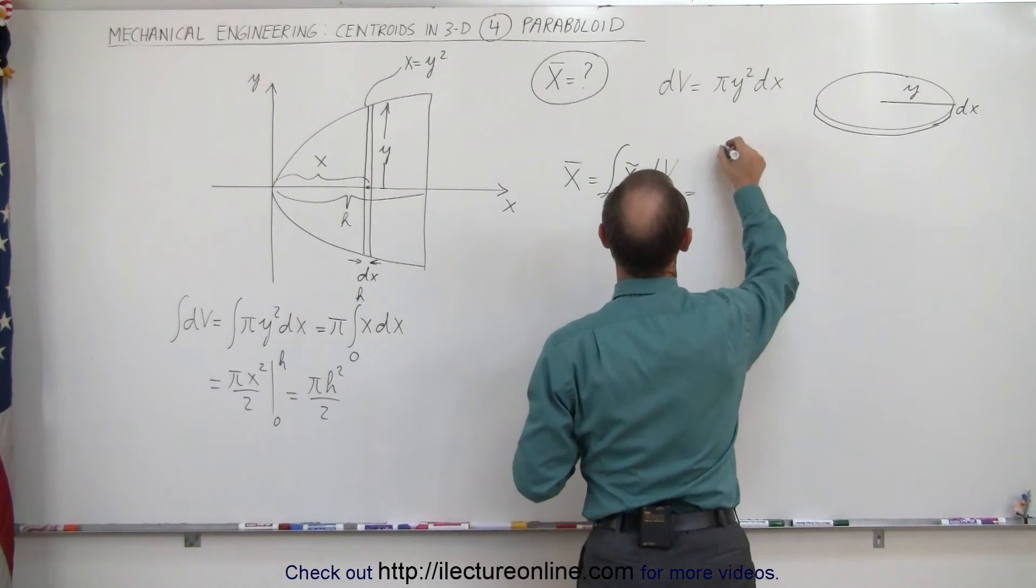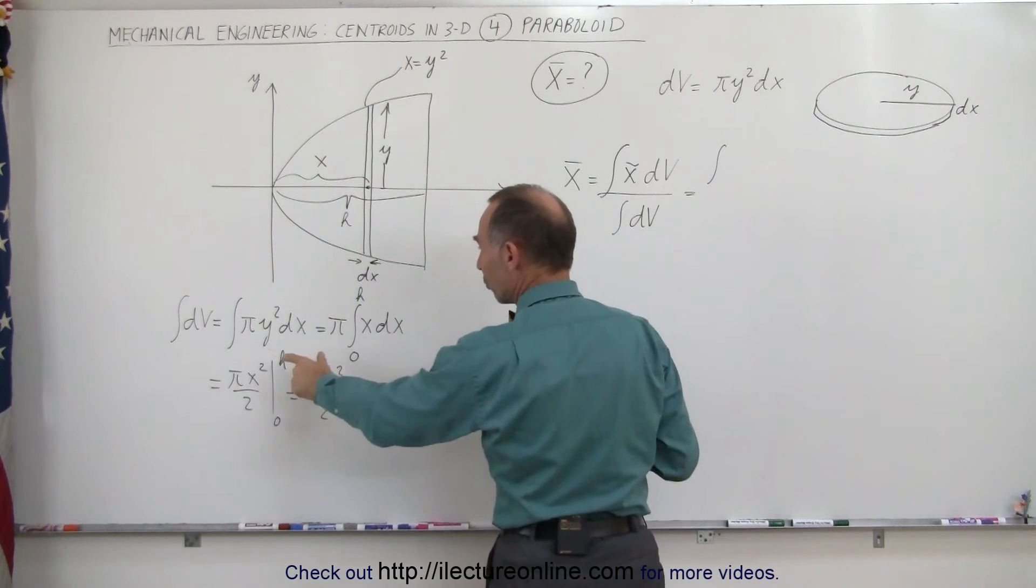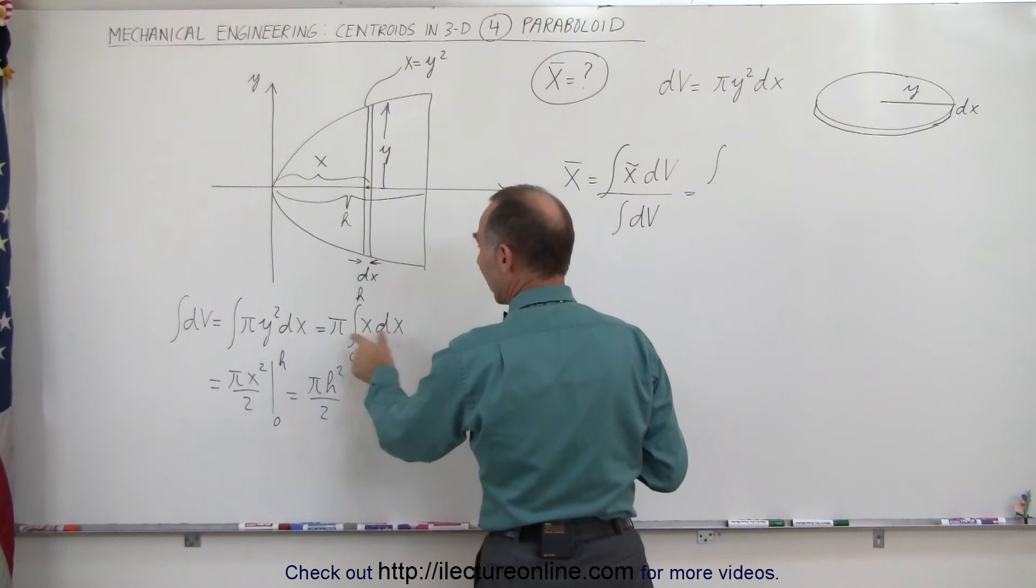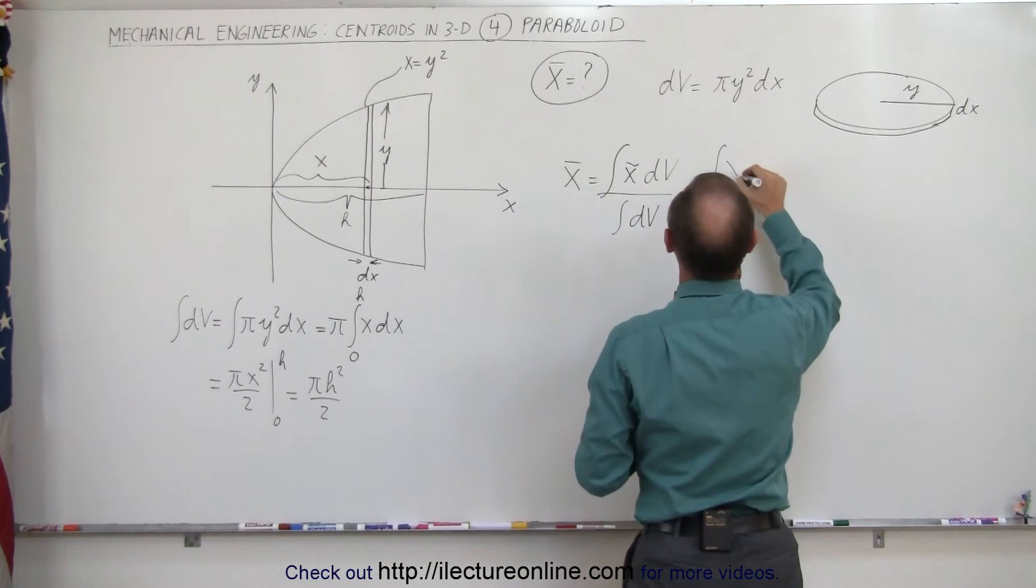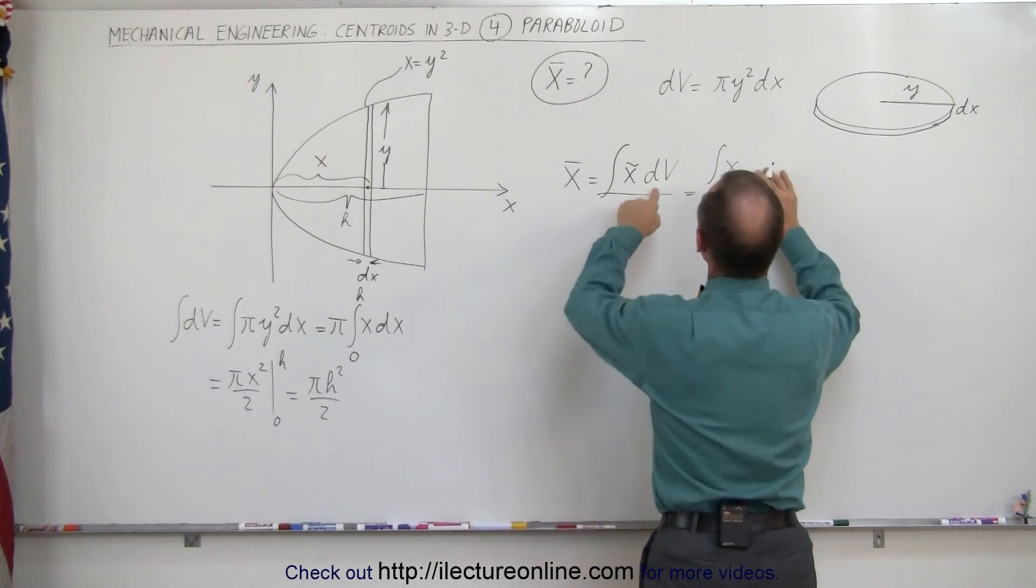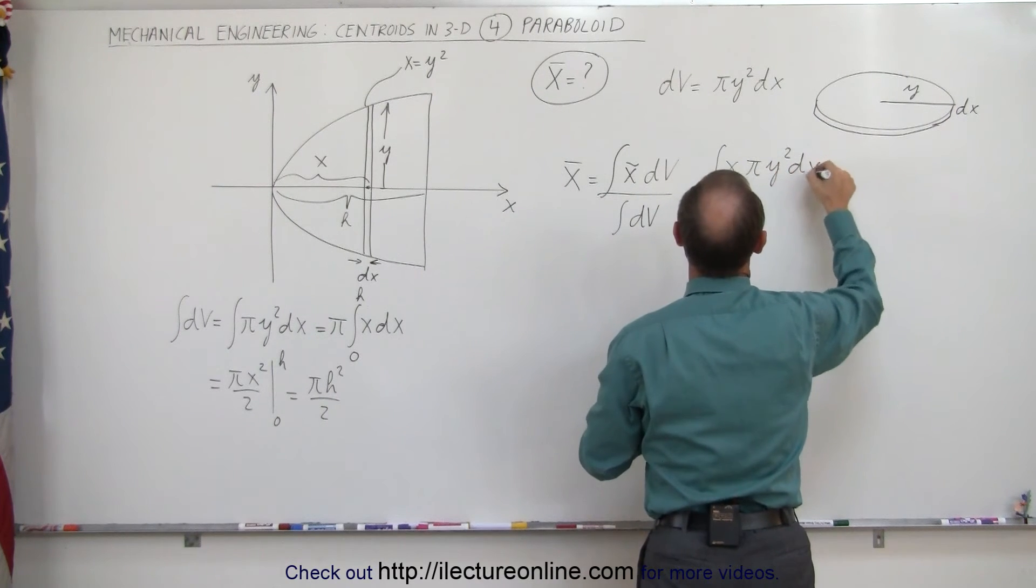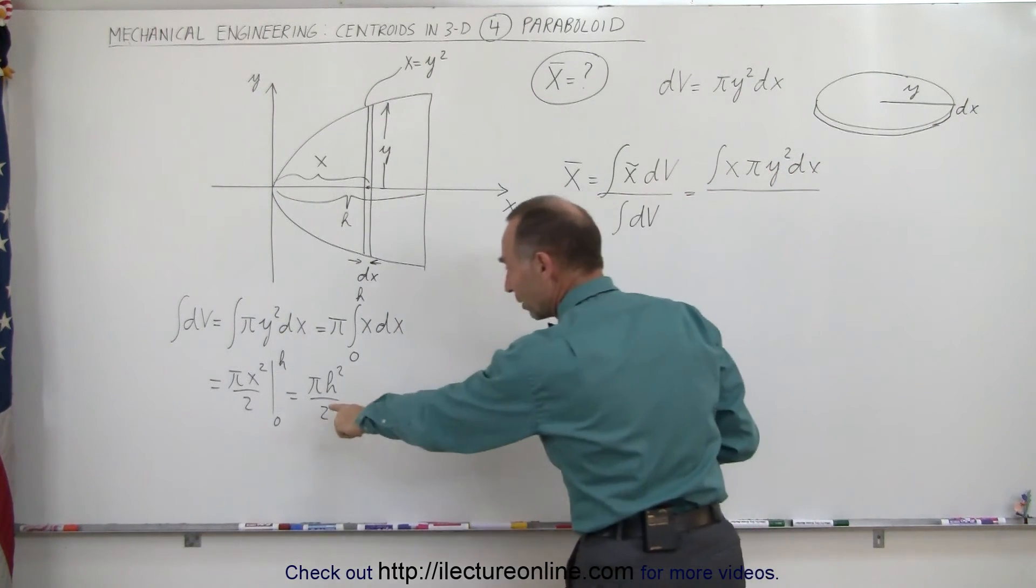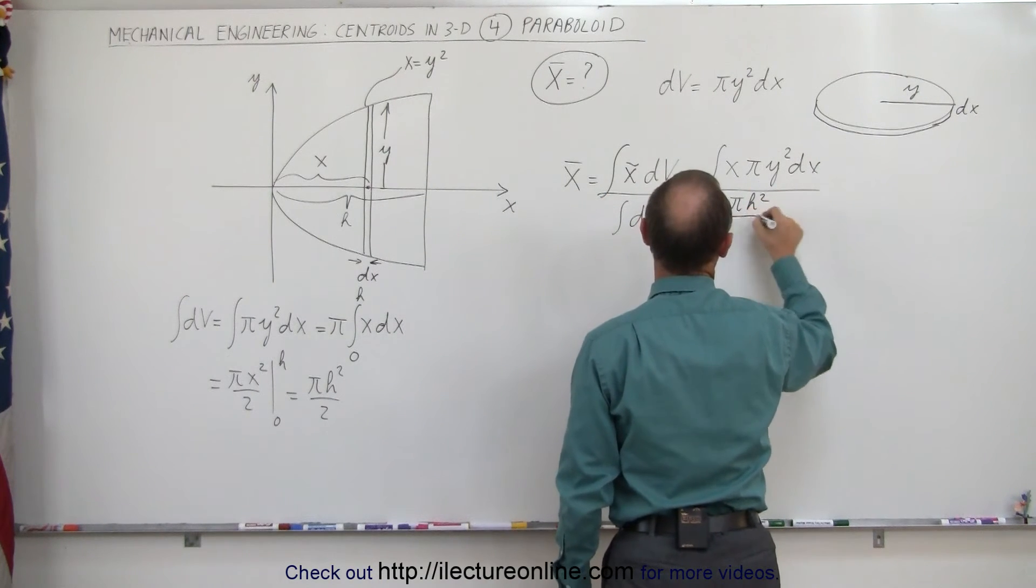This is equal to the integral of x times dv. Now we wrote dv in terms of x. So we have πx times dx. Let me do it again here. So we have x is the distance to the x coordinate of the little slice, and dv was πy²dx. We divide the whole thing by what we found to be πh² over 2.